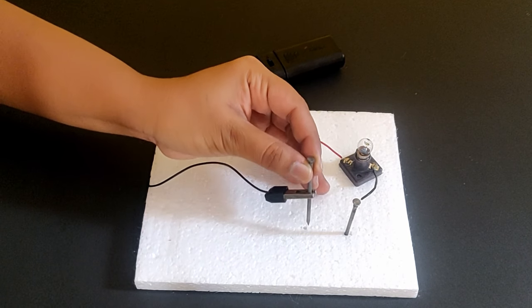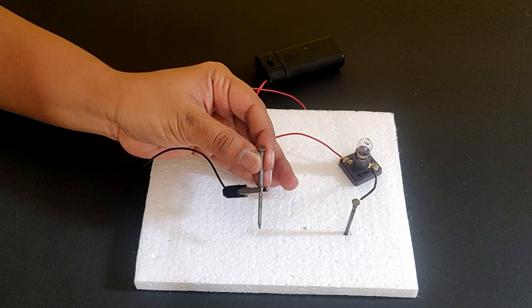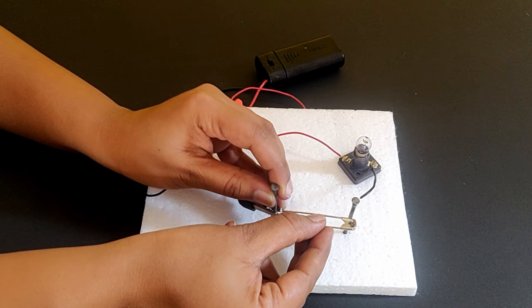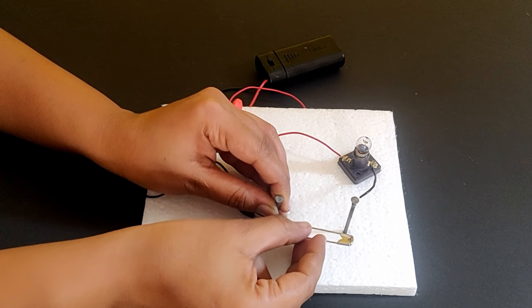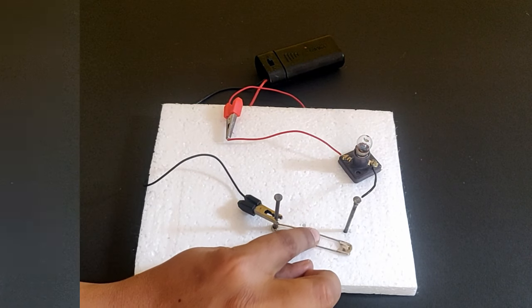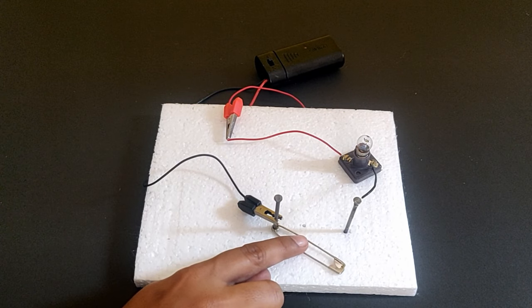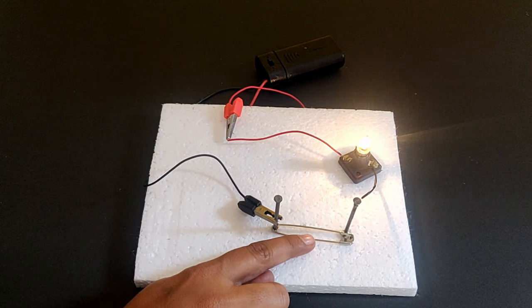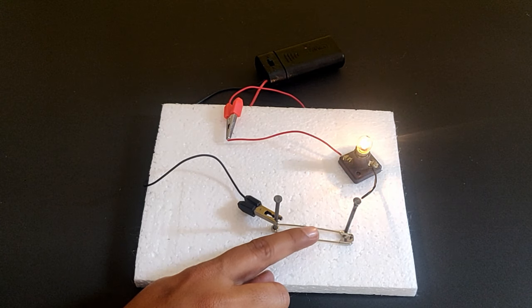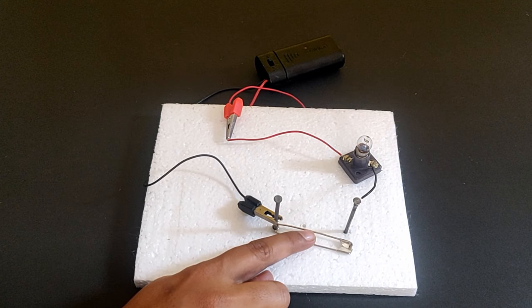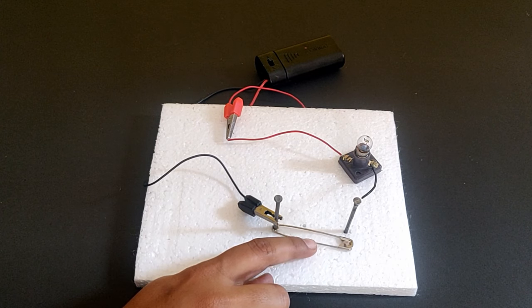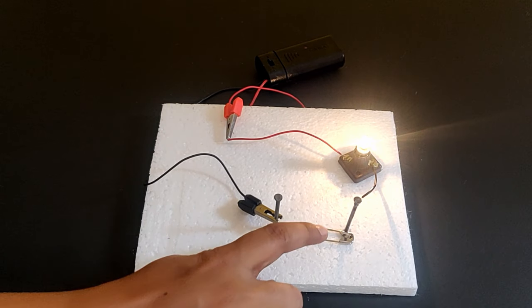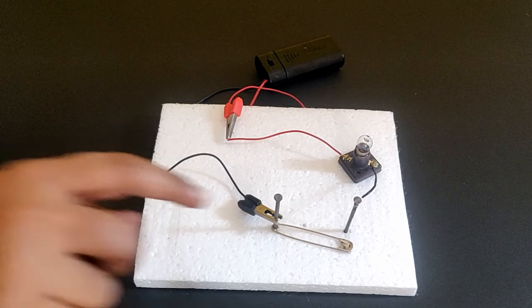Now lift the second nail and insert it into the loop of a safety pin and push the nail back into the thermocol. Check if the safety pin can swivel freely around the nail. Move the safety pin and touch the first nail using it. You will see the bulb glows when the safety pin is touching the first nail. This is because the circuit is now closed. The bulb stops glowing when the pin is not touching the first nail.